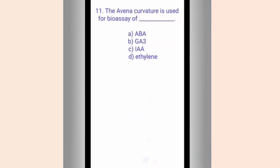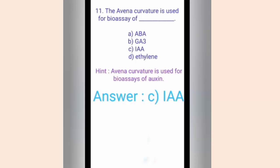Question eleven. The Avena curvature test is used for bioassay of dash. The options are A. ABA, B. GA3, C. IAA, D. Ethylene. The hint is Avena curvature is used for bioassay of auxin. The correct answer is option C, IAA, as from the above options IAA is the only auxin given.